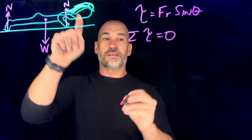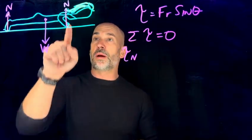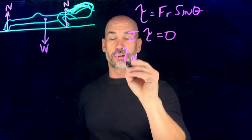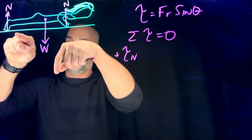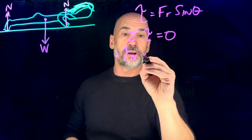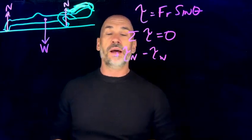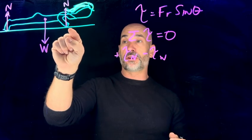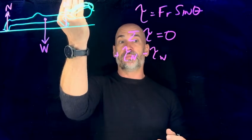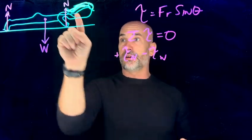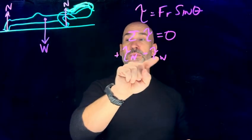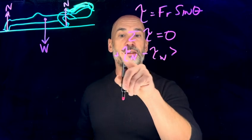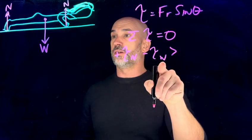The sum of torques in this case is the torque of this normal force. Remember, this normal force makes her want to rotate counterclockwise — that means it's a positive torque. And this weight makes her want to rotate clockwise, which is a negative torque. So the question is: what is the force she needs to be pushing on the ground in order to rise? The torque of the normal force minus the torque of the weight must be greater than zero.